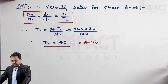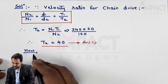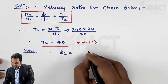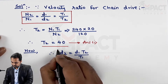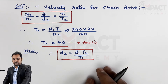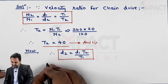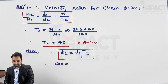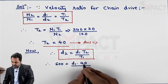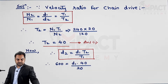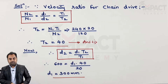Next, once T2 is calculated, I'll also find D1 using the same formula. D2 = D1 × T2 / T1. Since D2 is already given as 600 mm, we can find D1. Putting in the values: 600 = D1 × 40 / 20, so D1 comes out to be 300 mm.